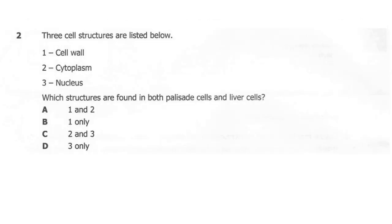Question 2. Three cell structures are listed below: 1. Cell membrane, 2. Cytoplasm, 3. Nucleus. Which structures are found in both plant cells and liver cells? A: one and two. B: one only. C: two and three. D: three only. So what's the correct answer? Is it A, B, C, or D?